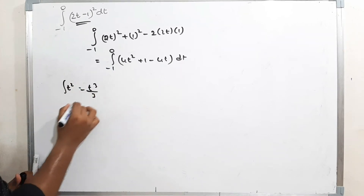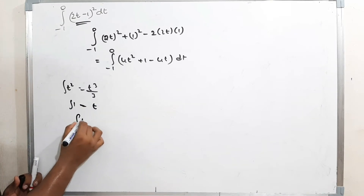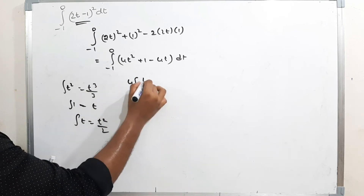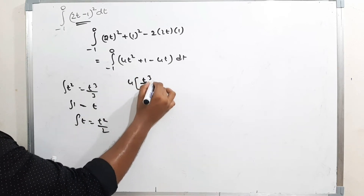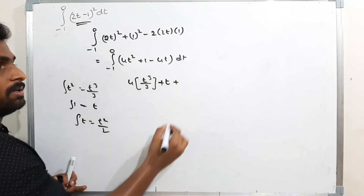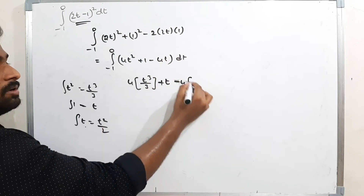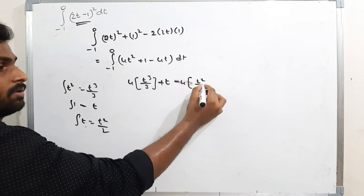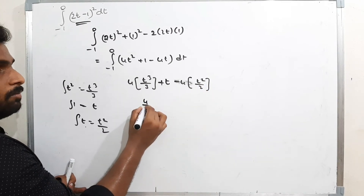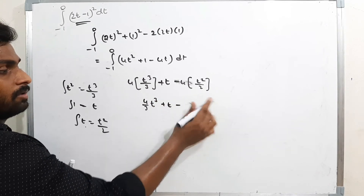The integration of t² is t³/3, the integration of constant 1 is t, and the integration of t is t²/2. So we get: 4·(t³/3) + t - 4·(t²/2) = (4t³/3) + t - 2t², with limits from -1 to 0.